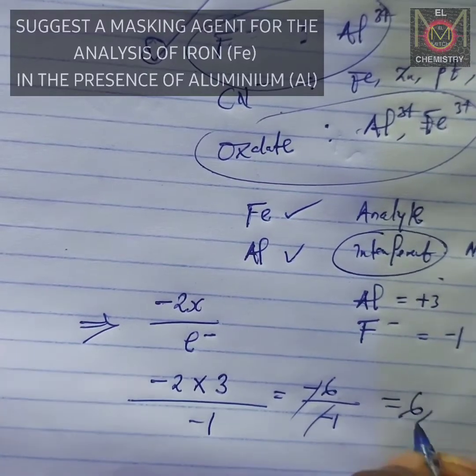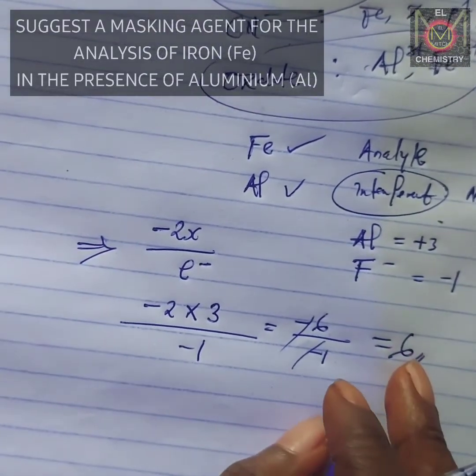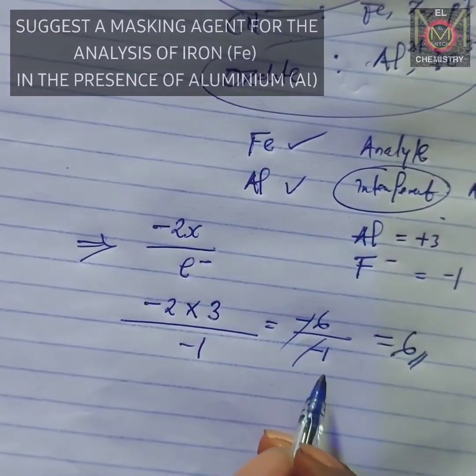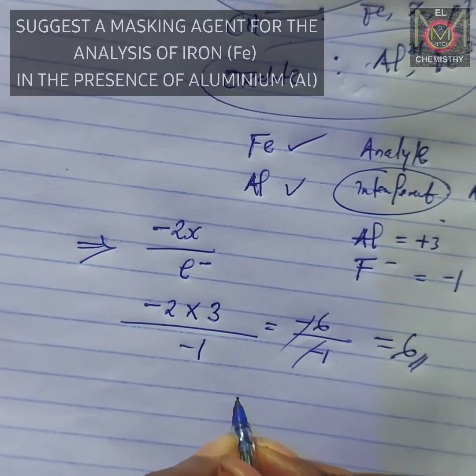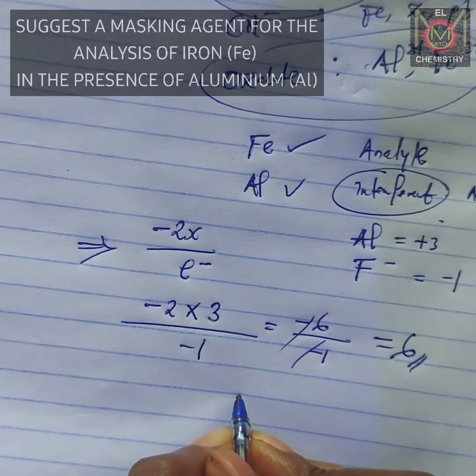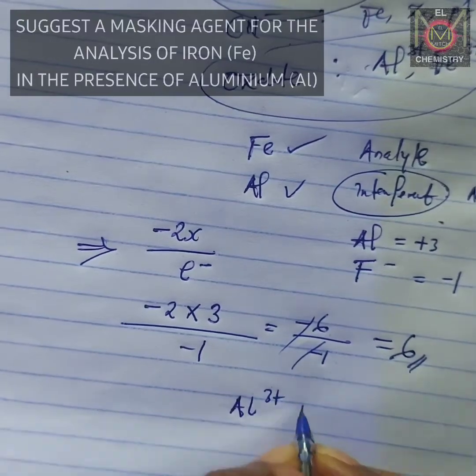This is telling you that the coordination number of the masking agent fluoride ion is 6. So all you have to do is write your complex form when masking the aluminum to be Al—that means if you have Al3+.